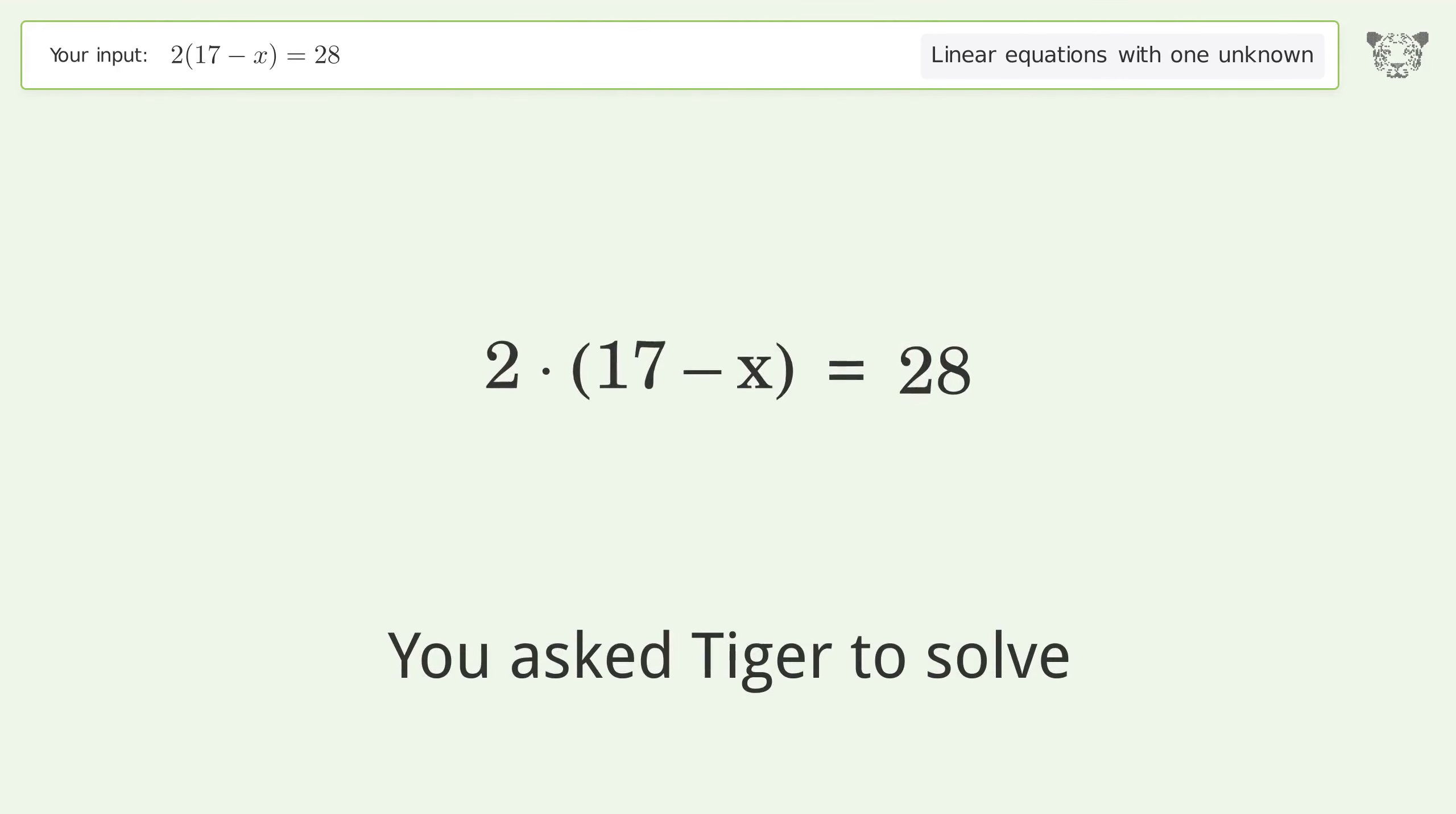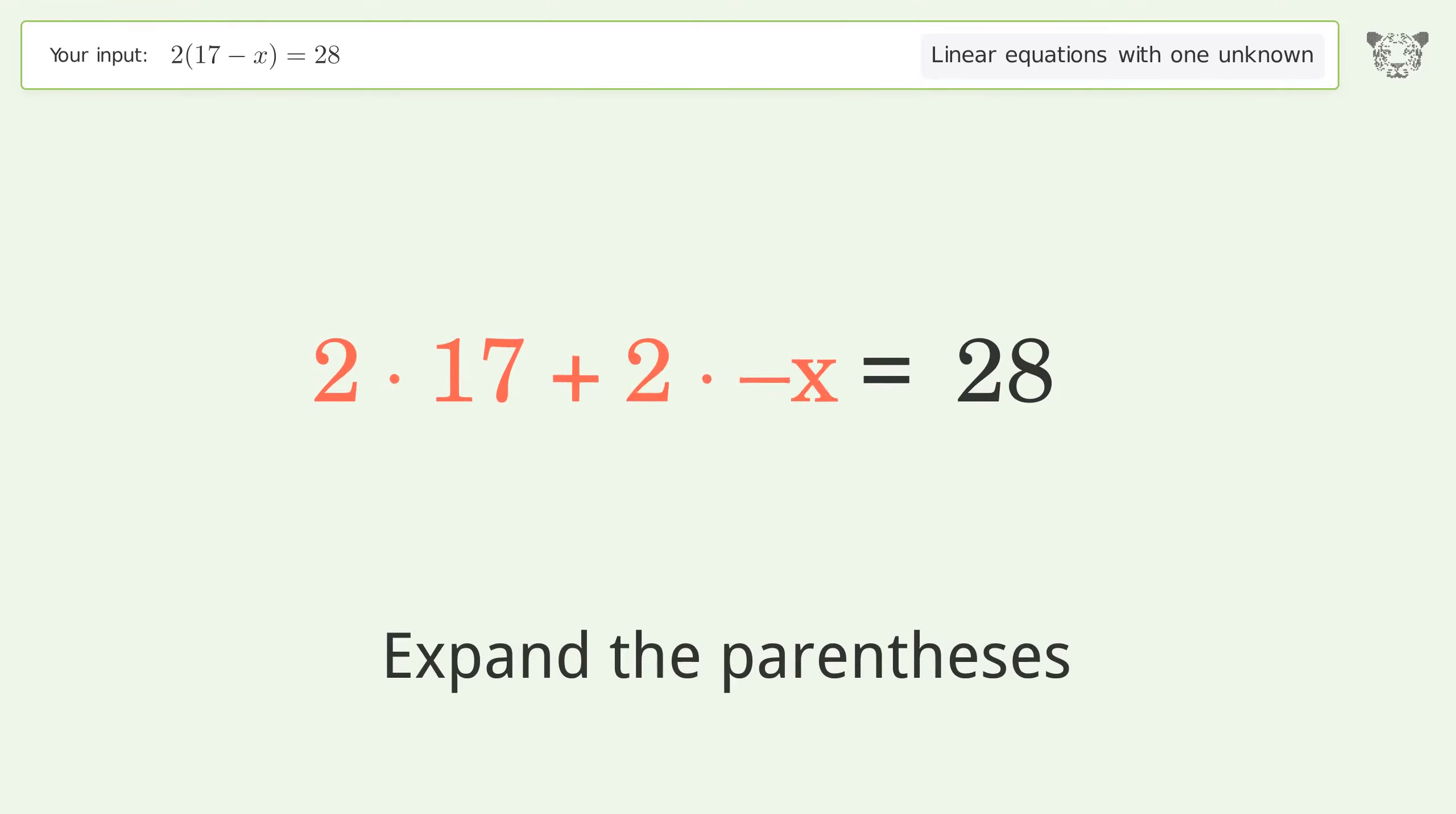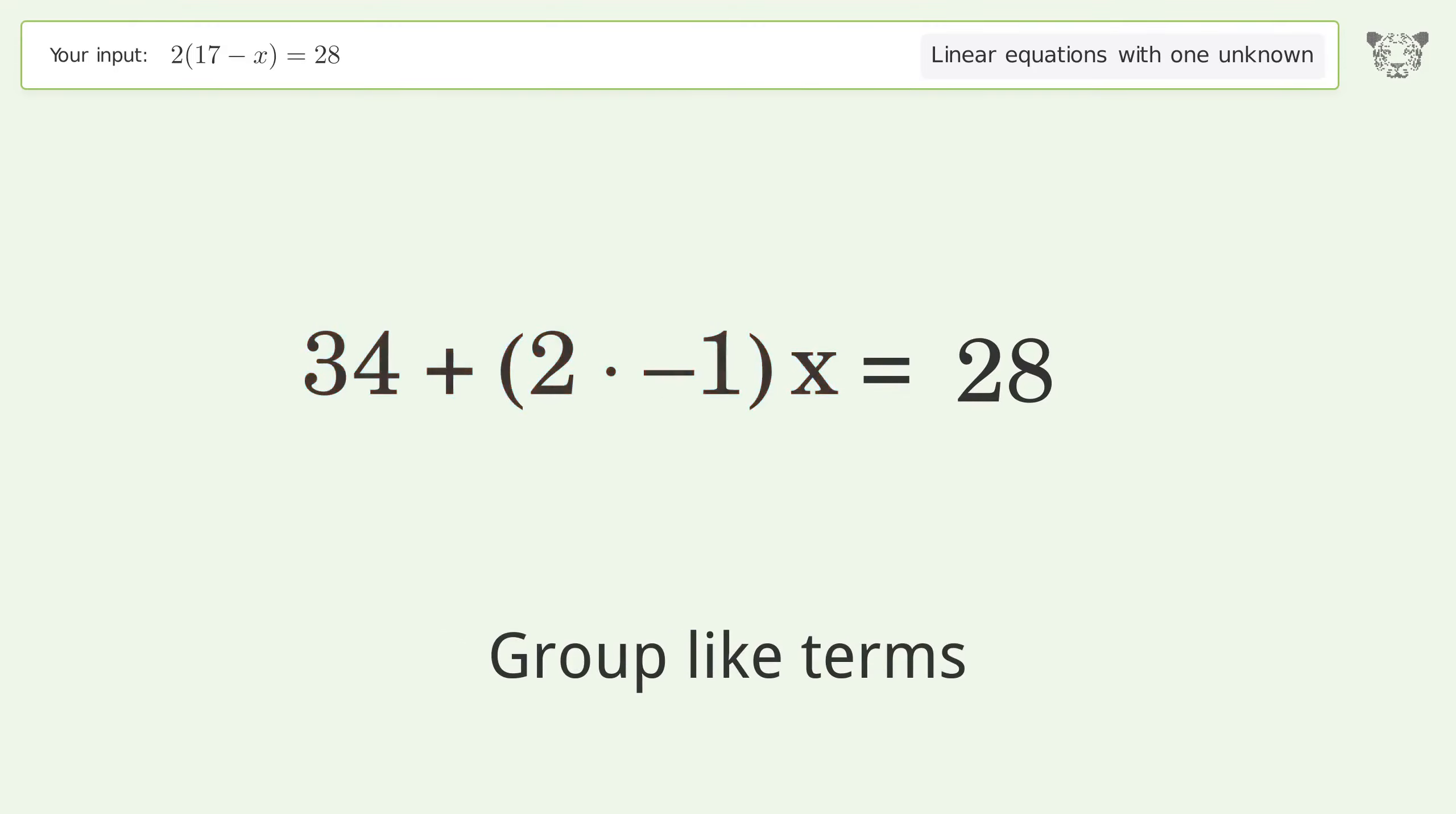You asked Tiger to solve this problem dealing with linear equations with one unknown. The final result is x equals 3. Let's solve it step by step: simplify the expression, expand the parentheses, simplify the arithmetic, group like terms, multiply the coefficients.